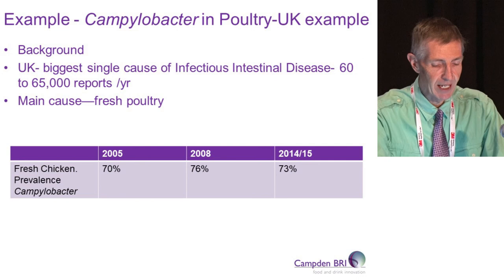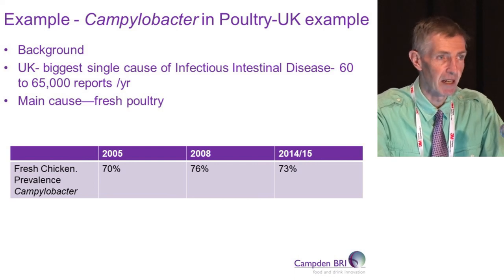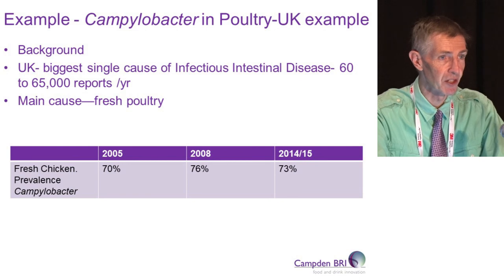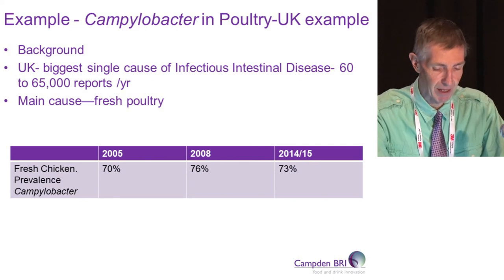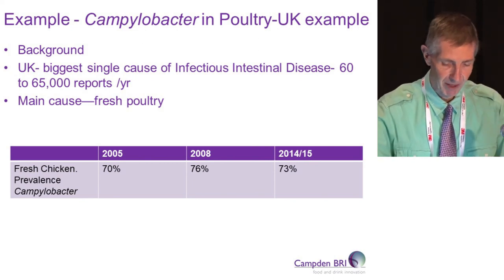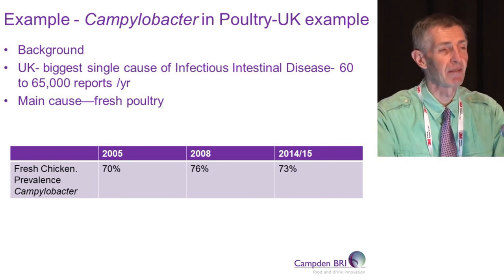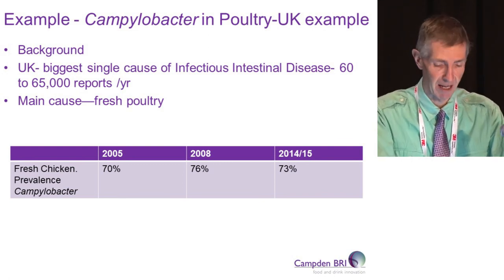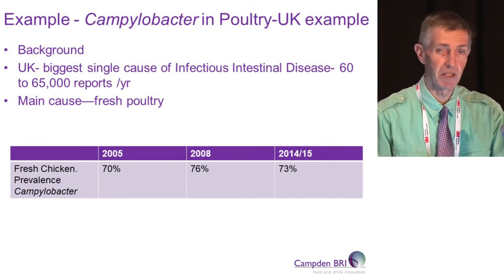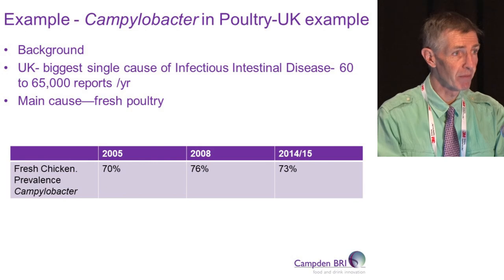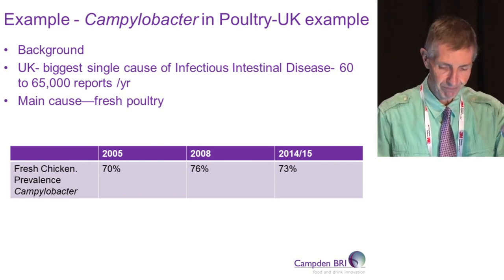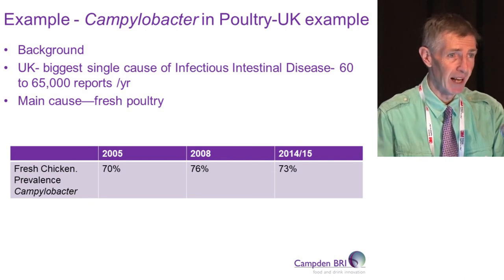The bottom table shows data collected by the UK Food Standards Agency on the prevalence of campylobacter in retailer-purchased whole birds. In 2005, about 70% of all birds bought in shops were contaminated with campylobacter, and this didn't change over the next 10 years. The challenge facing our competent authority, the Food Standards Agency, was how to decrease the amount of food poisoning from this source in a relatively short period of time. The approach was to use a criteria-based approach.